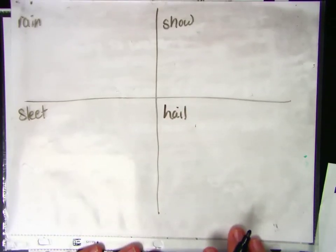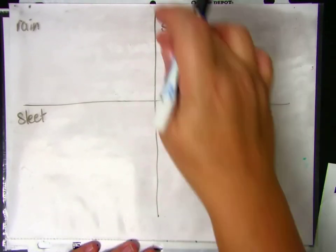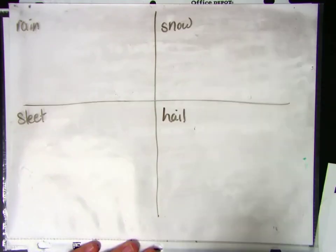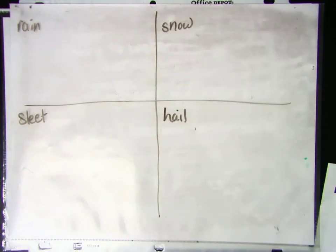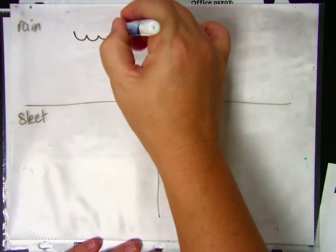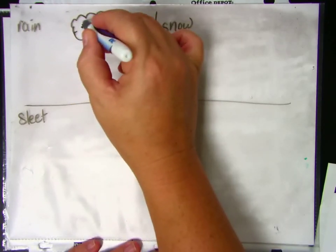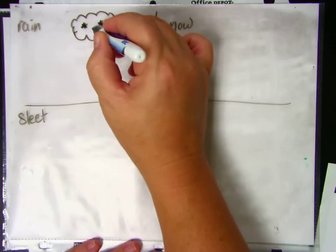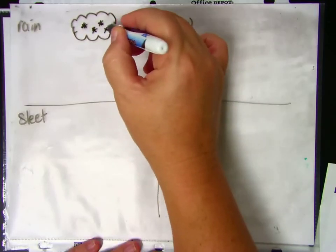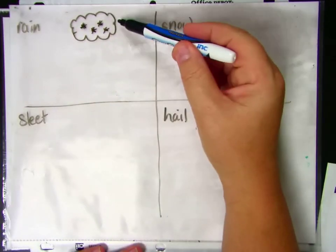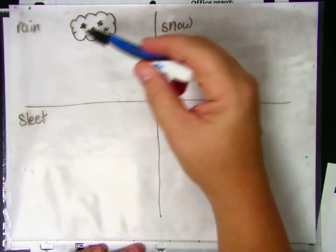And the reason that precipitation falls in different forms is because of the air underneath the clouds. So clouds always start with little ice pellets, and that's because it's so cold up in the atmosphere that once the water condenses it instantly turns into ice crystals.